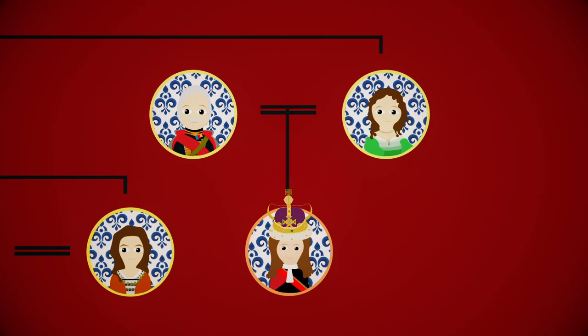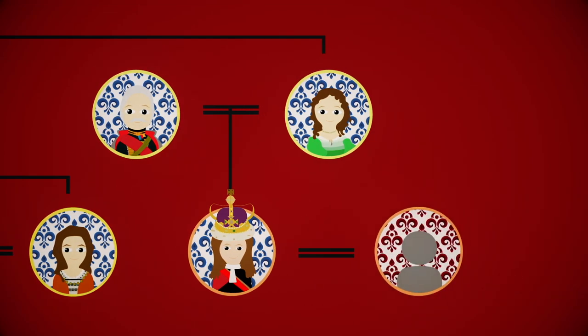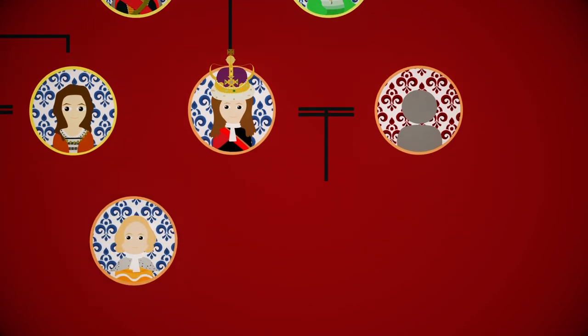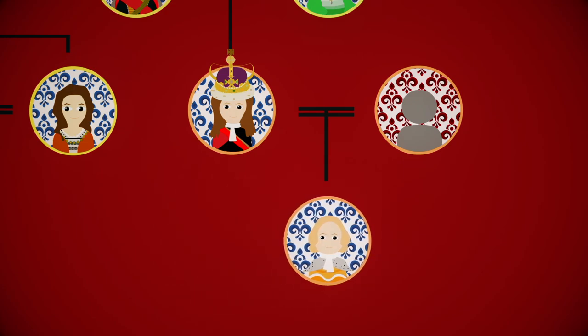Before becoming king, George married Sophia Dorothea of Sel. She was forced to marry George, but refused to be associated with him. They had two children, Sophia and George, who later became George II.